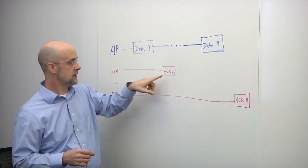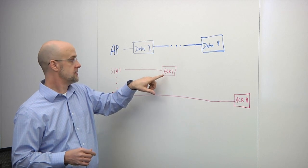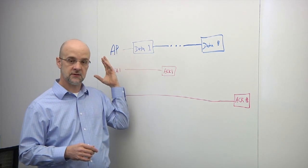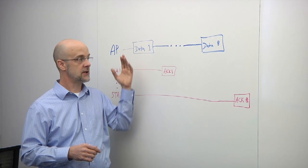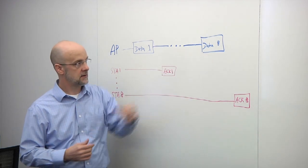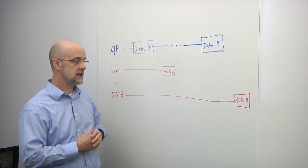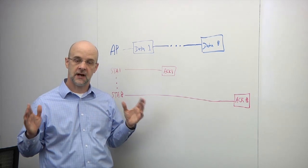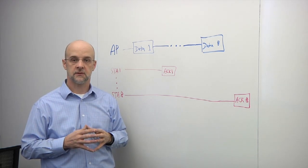And then as part of the protocol, the station has to acknowledge it received that data, so the access point knows the data was a successful transmission, and then it'll move on to the next data that it needs to send. And so by the time it gets to data eight, for the station eight, and it gets the ACK back, there's a significant amount of time, and so we're tying up that precious resource for a longer period of time.